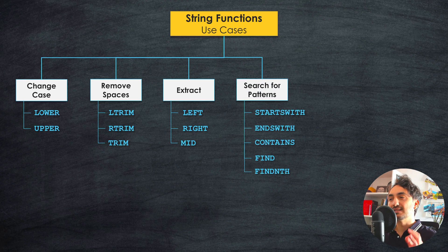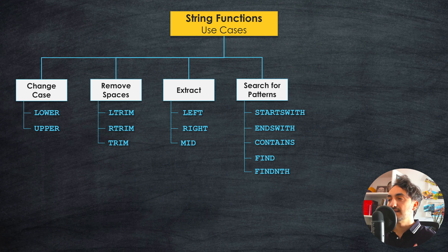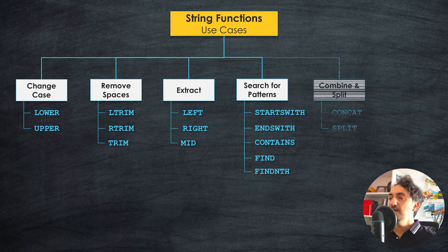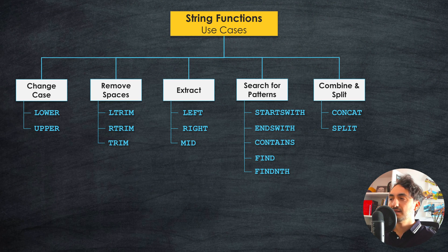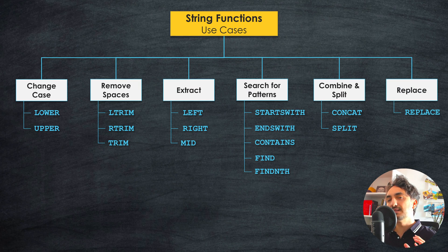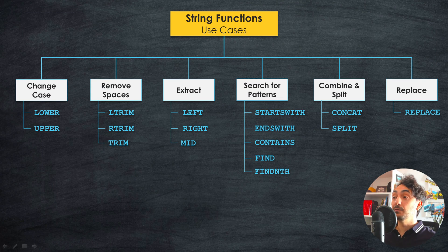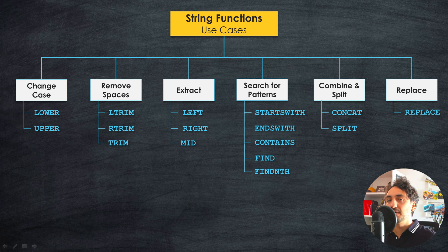The next use case is to search for specific patterns. Here we have five functions: starts with, ends with, contains, find, and find int. Then we have another use case for string functions to combine and split data inside Tableau — the concat operator and the split function. The last use case is to replace a specific substring with another substring, using the replace function. So as you can see, we have a lot of string functions and tools to manipulate, transform, and clean up text values in Tableau.